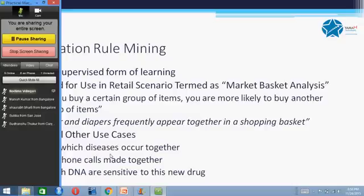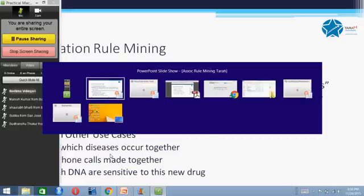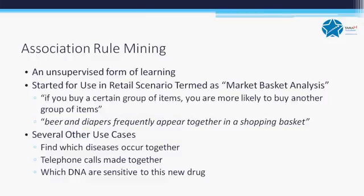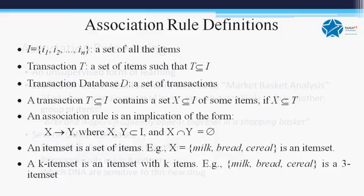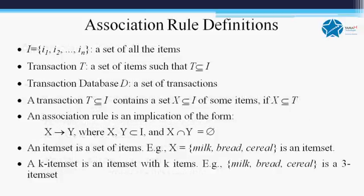But what exactly do you mean by association rule? It's basically a very simple implication rule which is of the form saying that if you have a set of items which imply another set of items X and Y, so that both are itemsets, sets of items, and none of them have any common item. So a k-itemset is an itemset with k items.